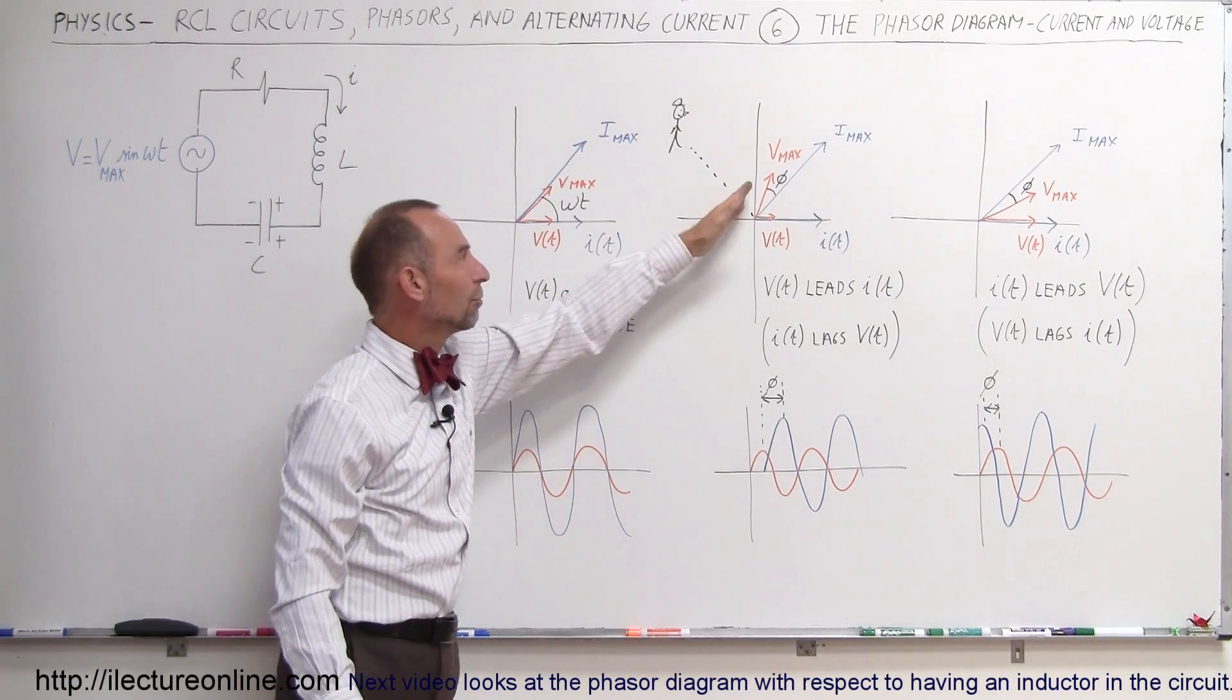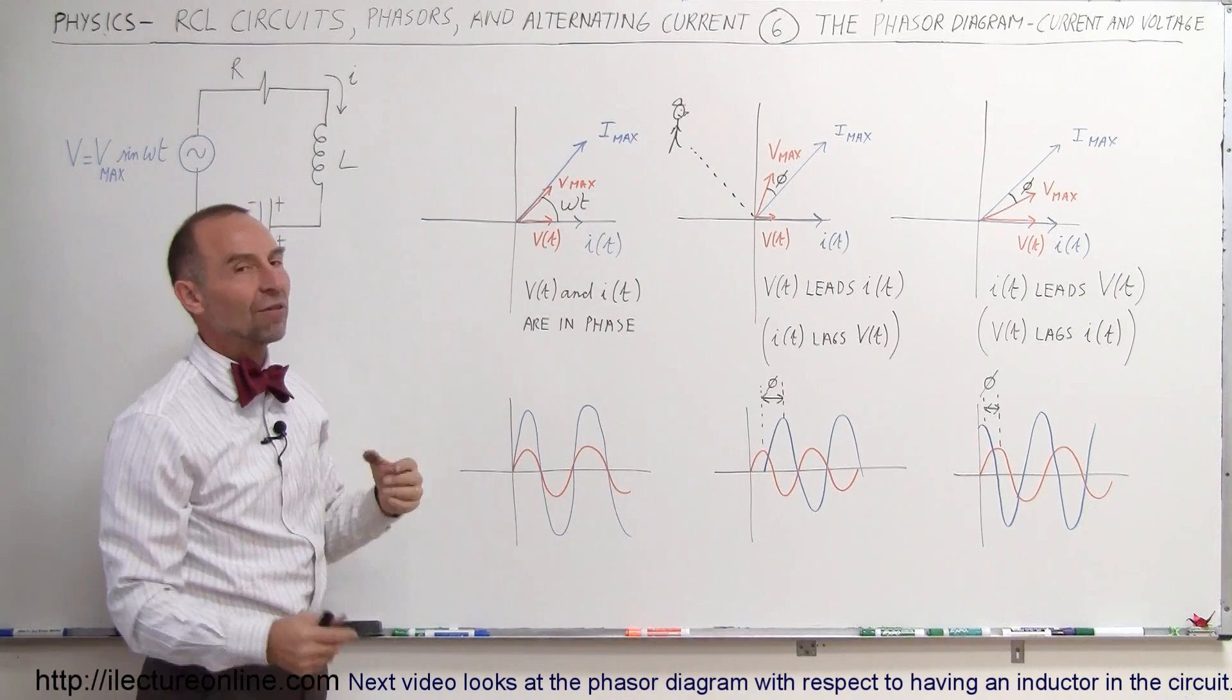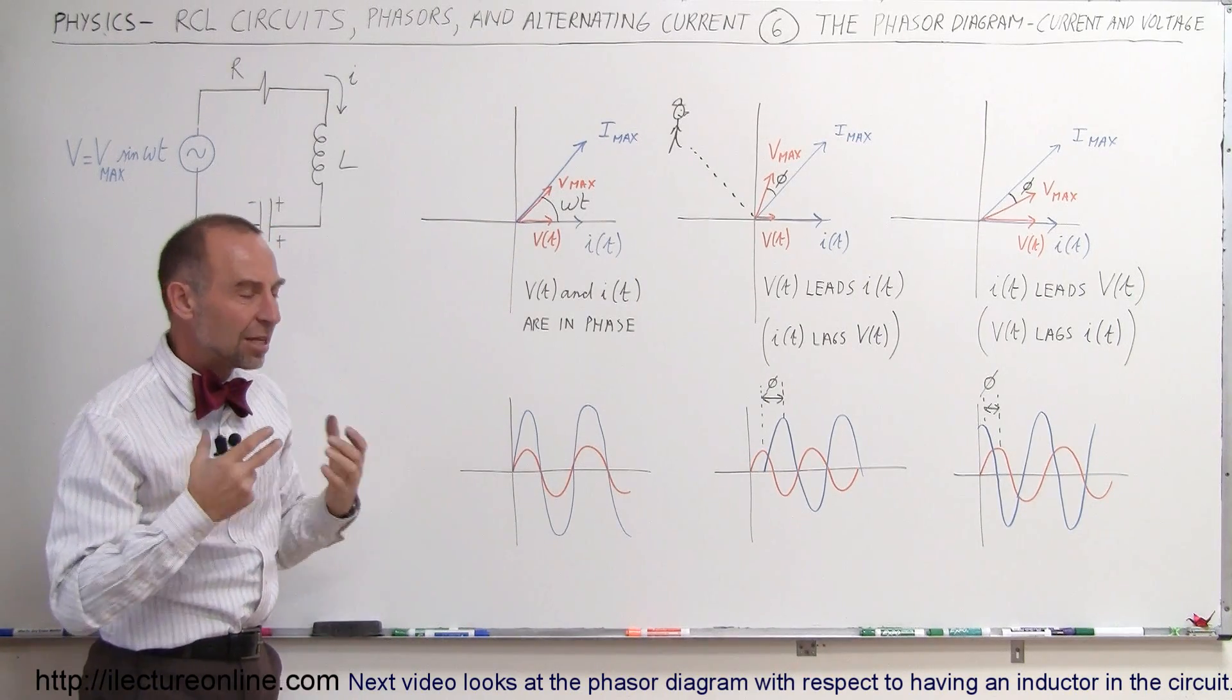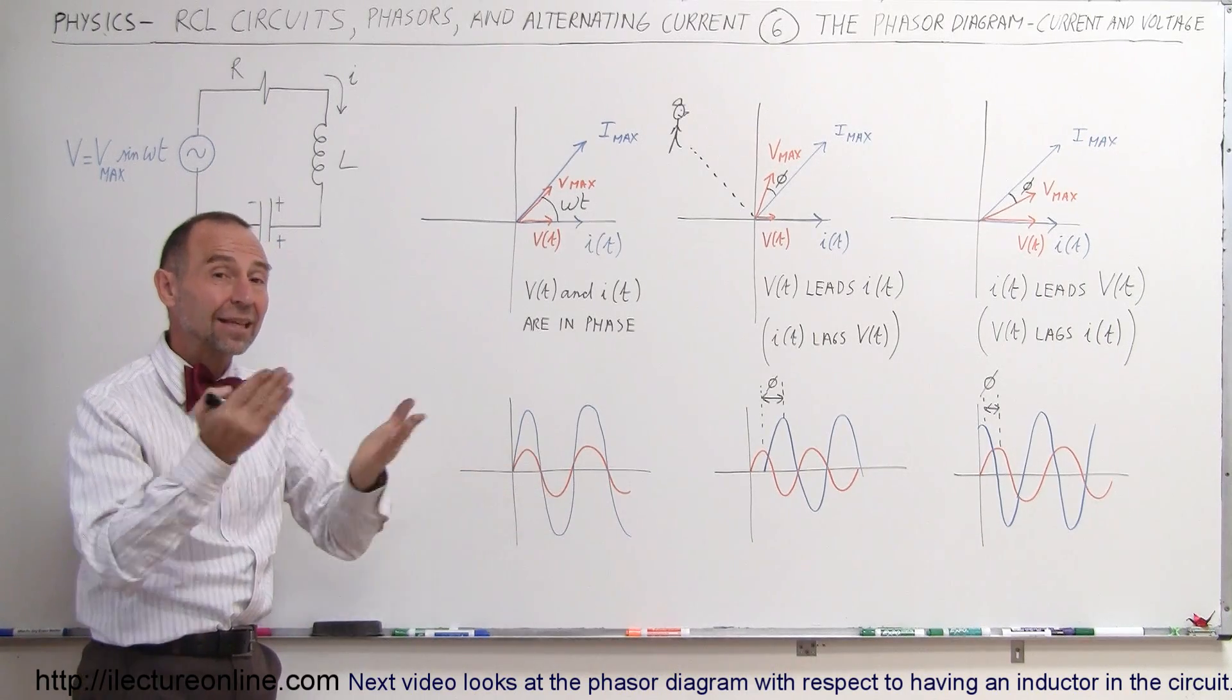In the second case here, when the voltage leads the current, we have an inductor dominating circuit. And when we have them both in the same phase, that means that the inductor and the capacitor oppose the current in the same amount of time, and they tend to cancel each other out. We will see why in a few more videos.